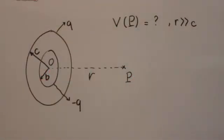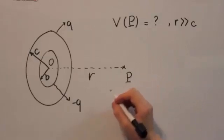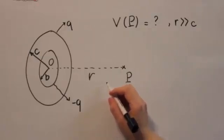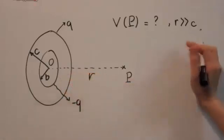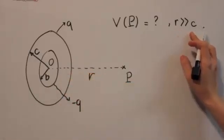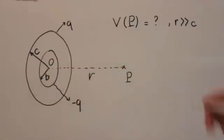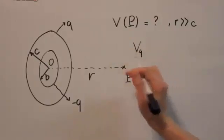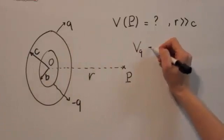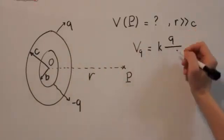Back to our problem. Now we want to find the total electric potential at point P that's located really far away from two rings. In this case, r is really large compared with the radii. As we mentioned before, the electric potential due to the ring with total charge Q is k Q over r.